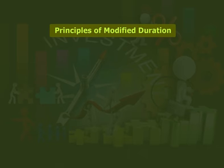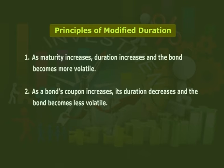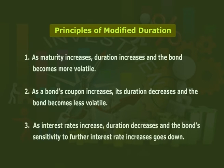Let us note down some principles of duration to keep in mind. Number one: as maturity increases, duration increases and the bond becomes more volatile. Secondly, as a bond's coupon increases, its duration decreases and the bond becomes less volatile. Lastly, as interest rates increase, duration decreases and the bond's sensitivity to further interest rate increases goes down.